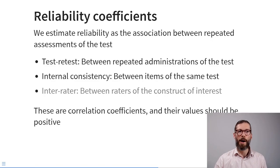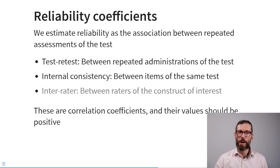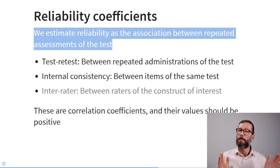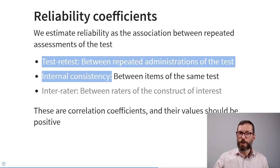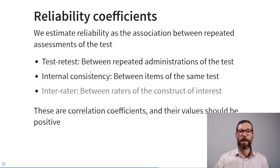How can we estimate reliability? There are reliability coefficients for each type. In general, we try to estimate the association between repeated assessments of the test: between repeated administrations over time (test-retest), between different items of the same test (internal consistency), or between scores of different raters (inter-rater reliability — which falls outside the scope of this course).